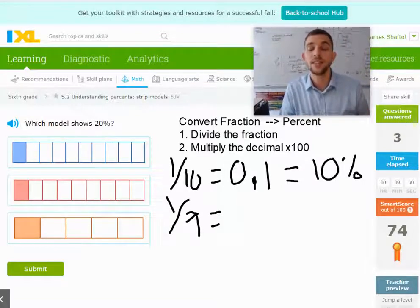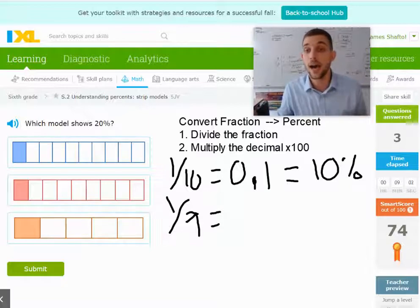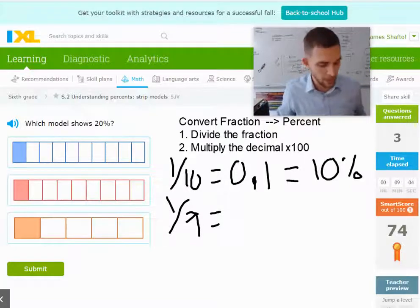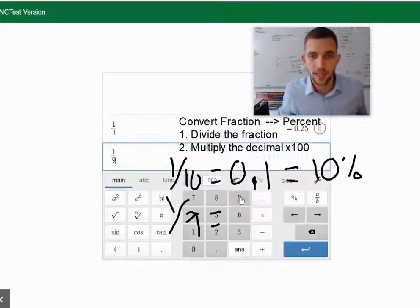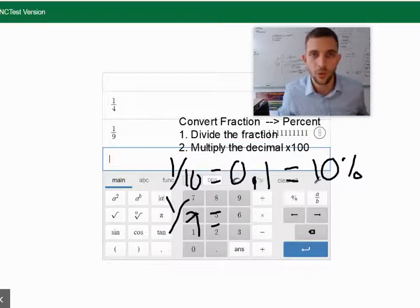And if we took 1 divided by 9, that's actually not one that I know off of the top of my head. So let's use our calculator. 1 divided by 9, and I get 0.11111.